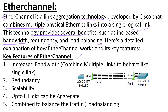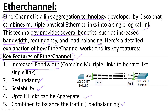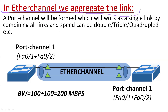The key features of EtherChannel are: it increases the bandwidth. For example, if you have a network where multiple switches are connected and the bandwidth of a single link is 100 Mbps, and you want to enhance the speed up to 500 Mbps, you can create an EtherChannel by combining multiple links. It also provides redundancy, path scalability, and a maximum of eight links can be aggregated. The combined link also balances the traffic.